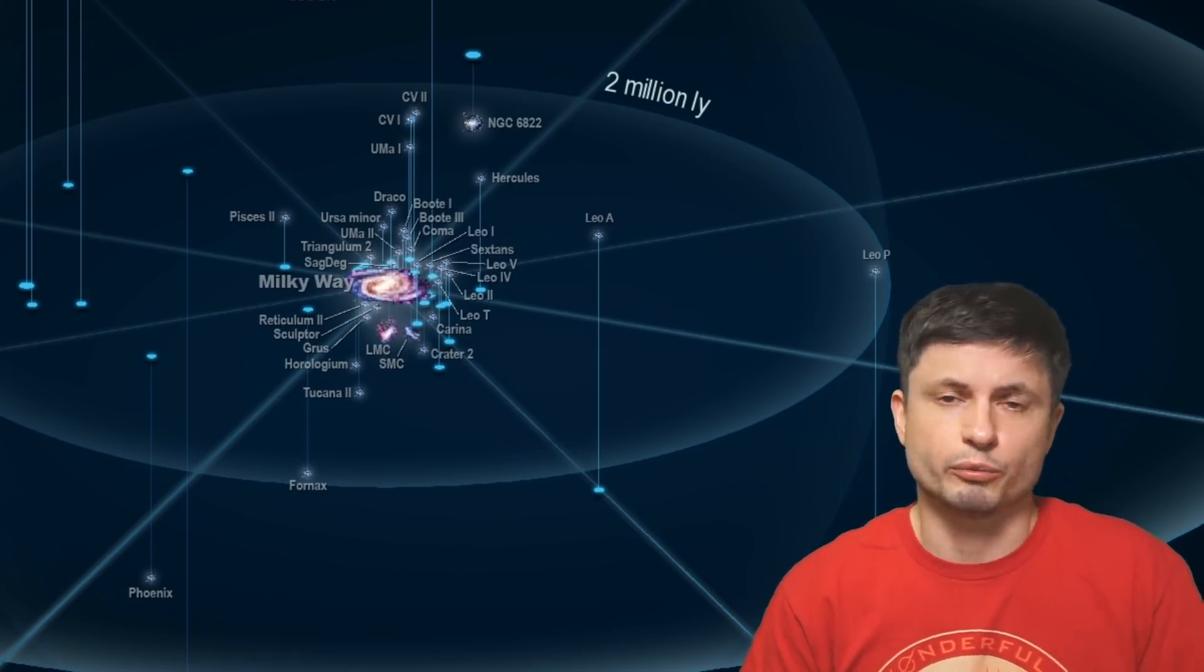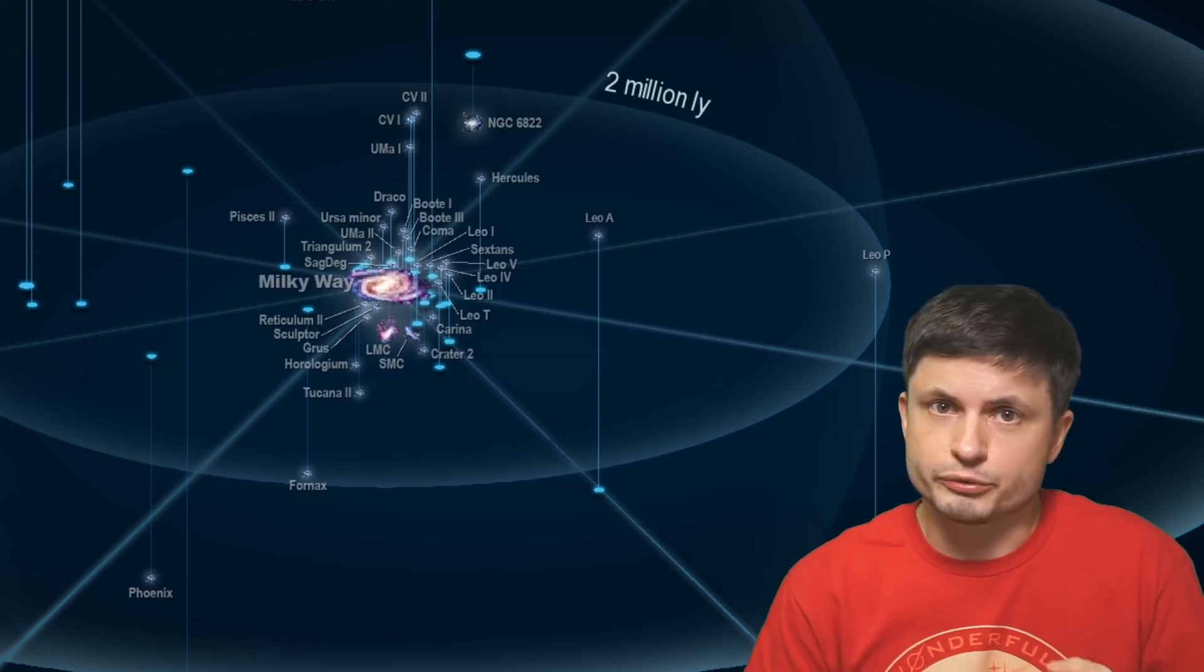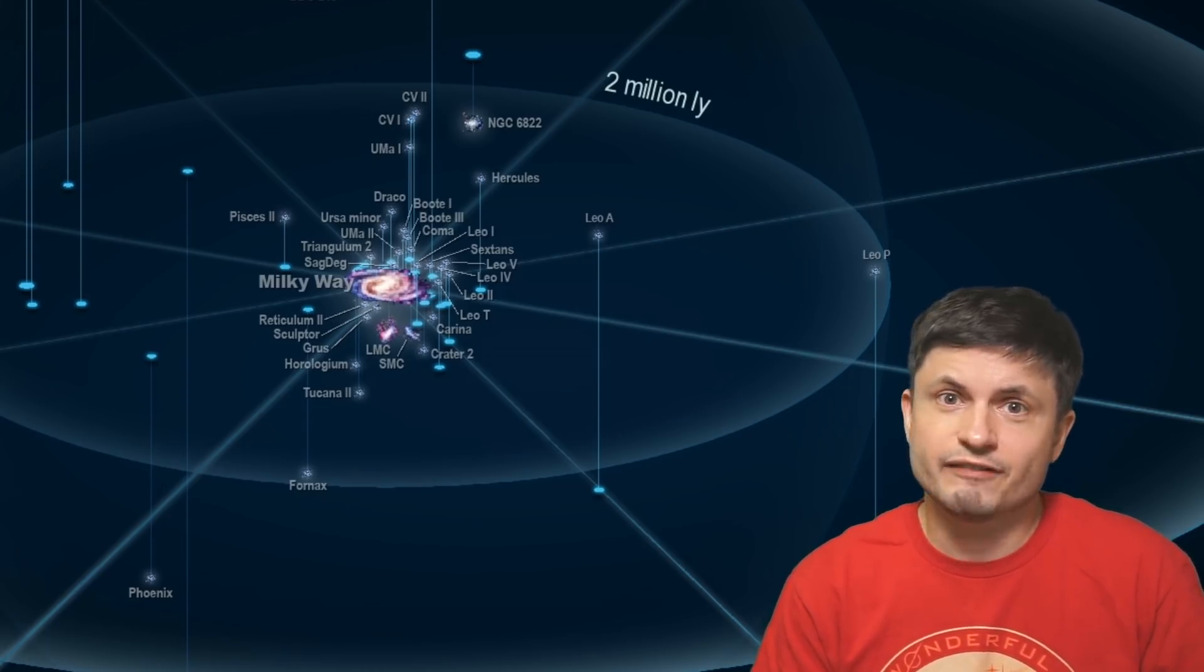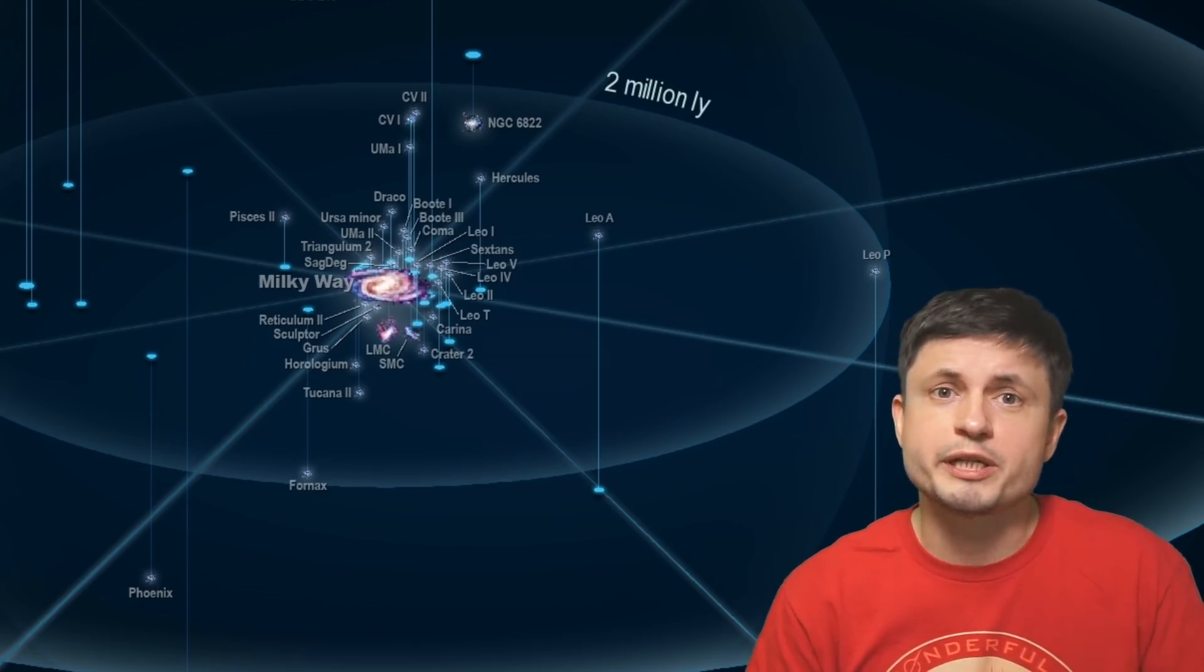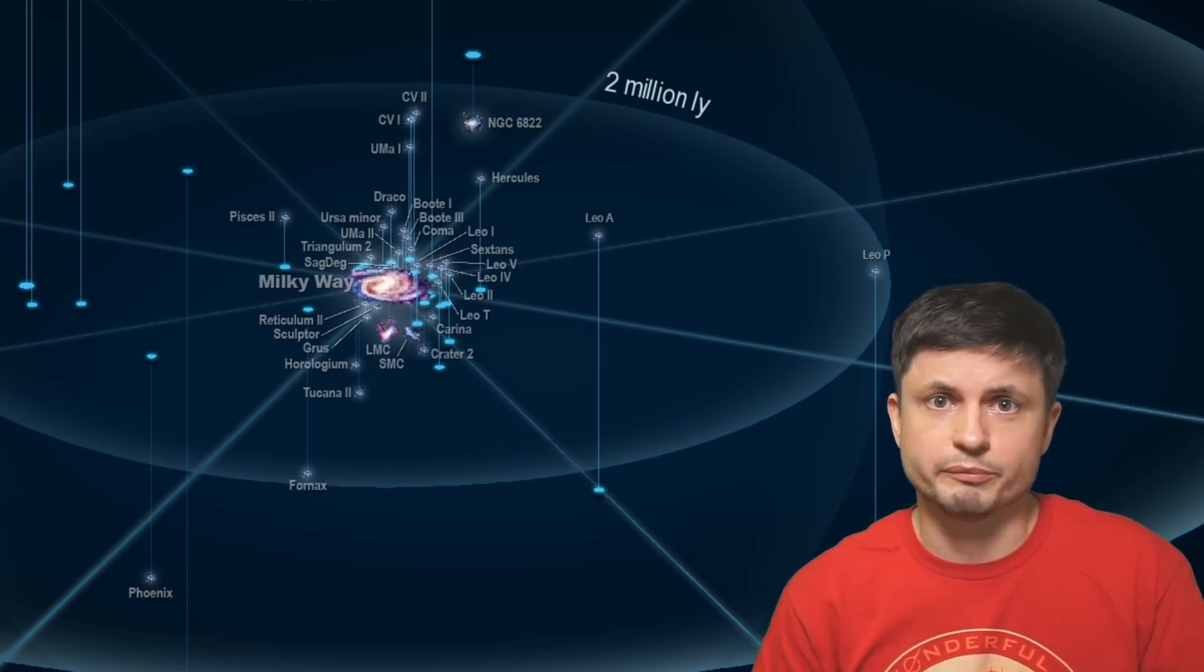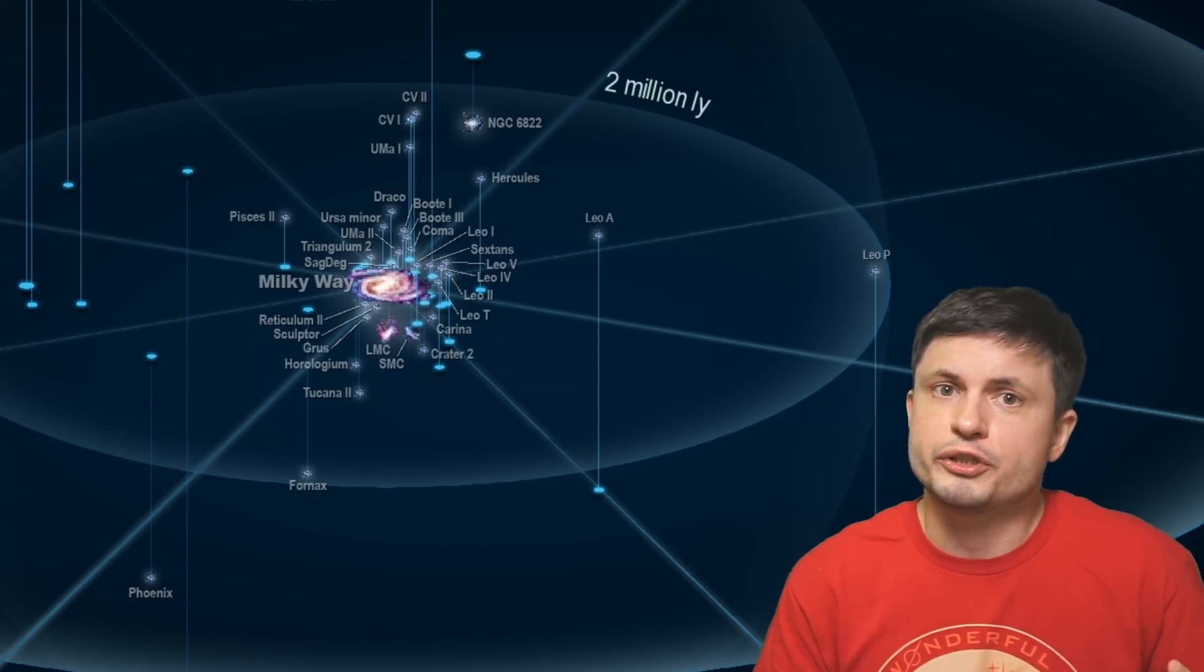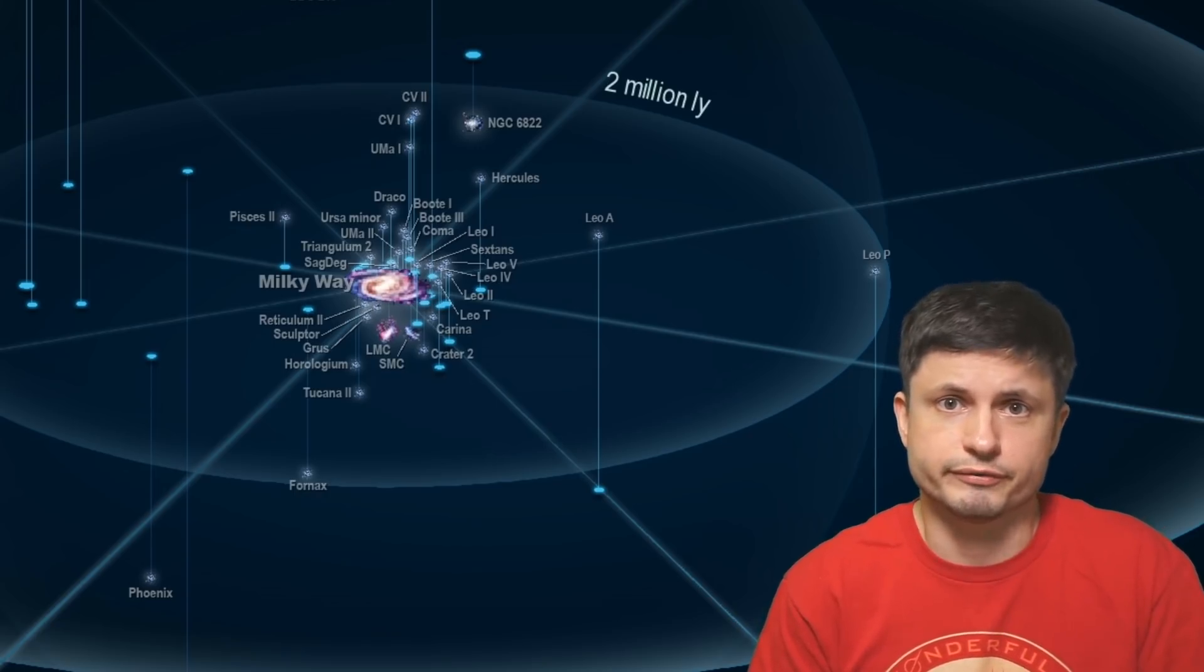But what about the other ones? Well it's always been implied that they're also orbiting but it's never really been officially proven. And looks like this recent study suggests that none of them are in orbit. As a matter of fact, all of them seem to be moving extremely fast, suggesting that pretty much most of them, if not all of them, are basically on their entry to the Milky Way and will very likely get completely destroyed when they come close enough.